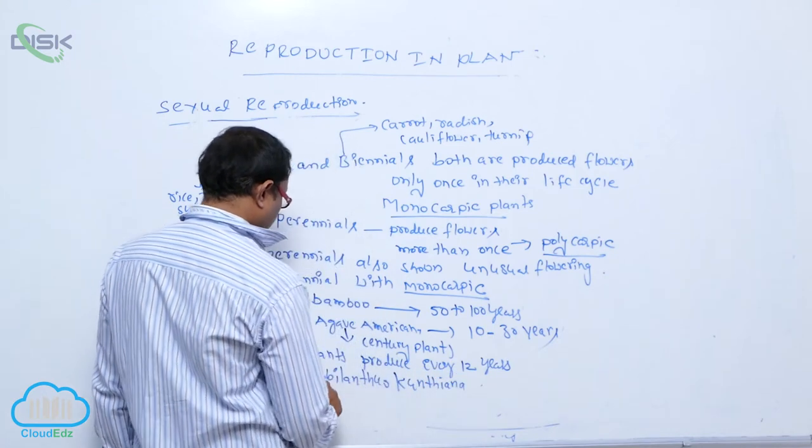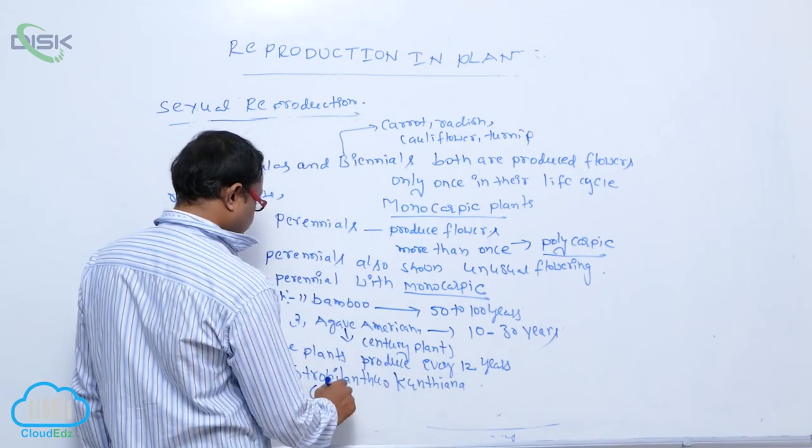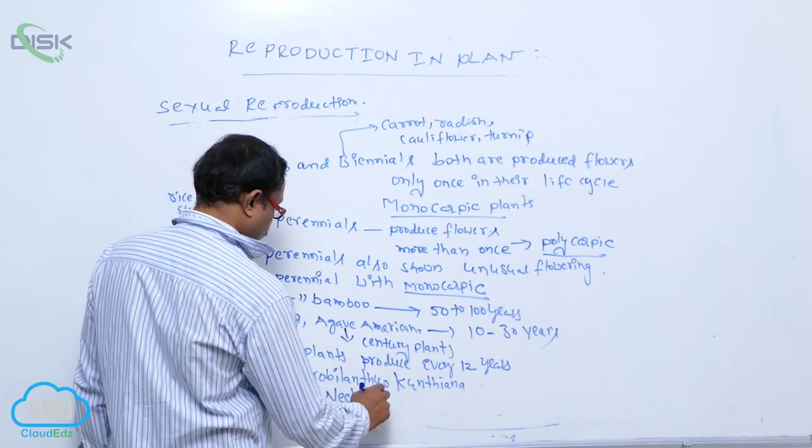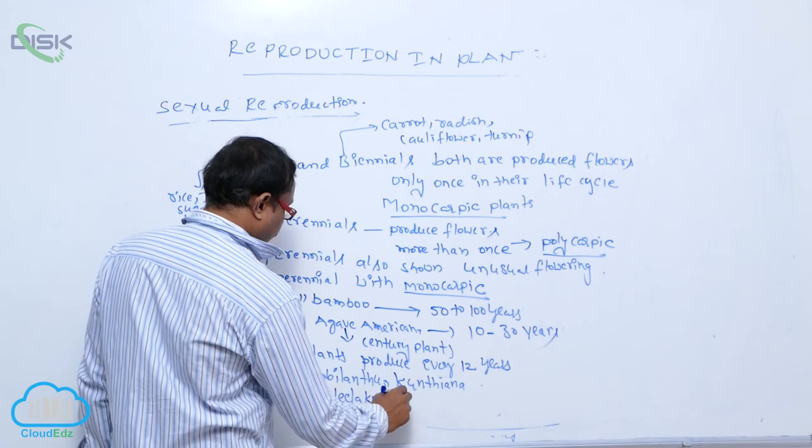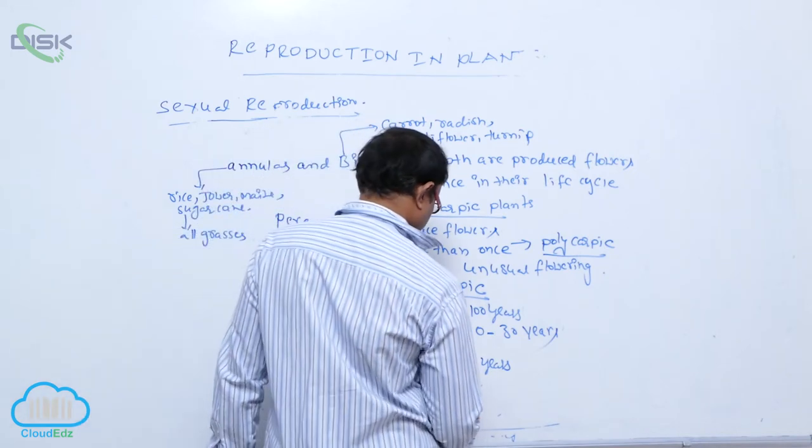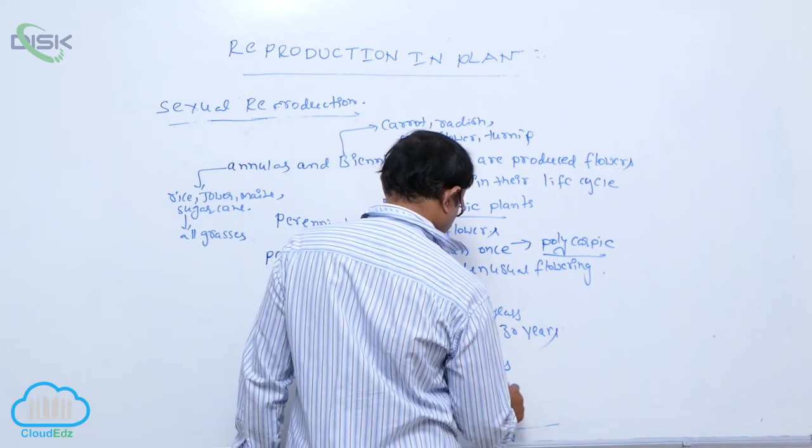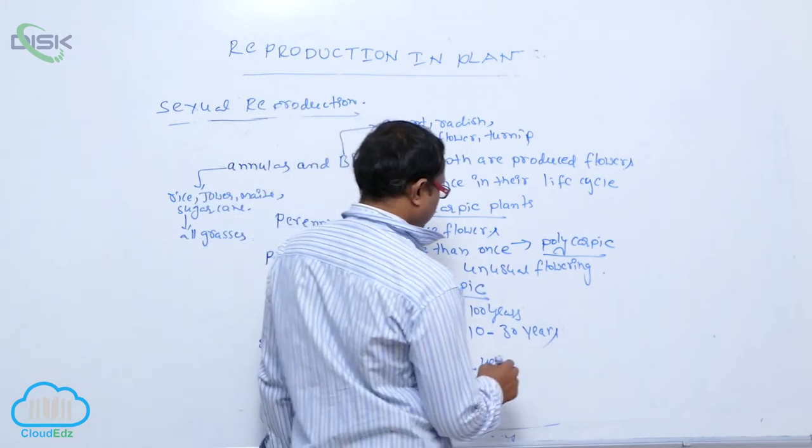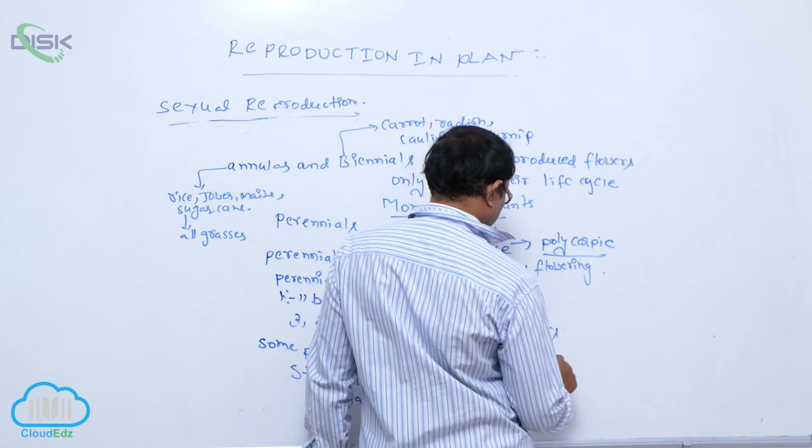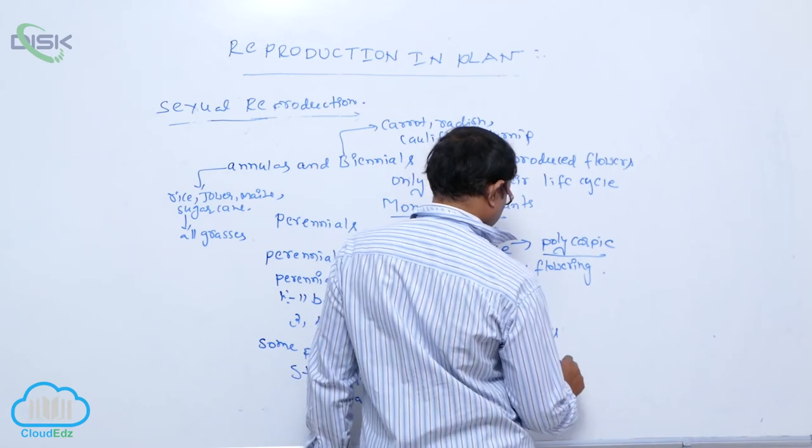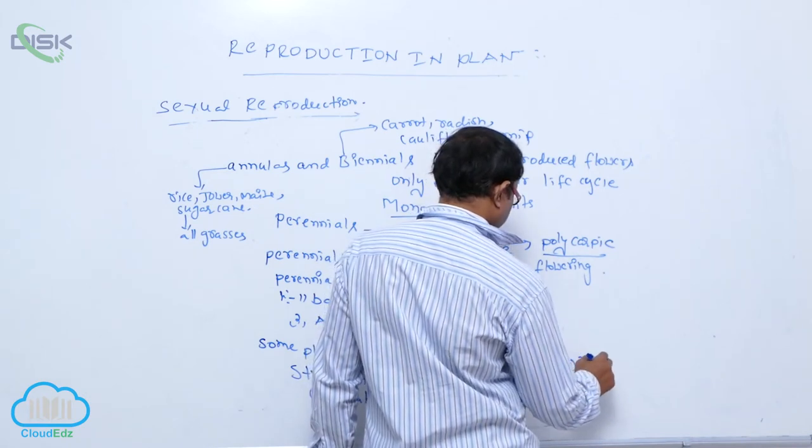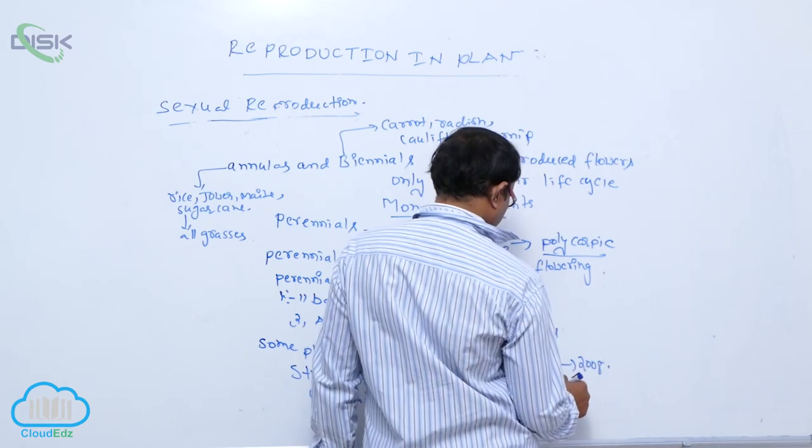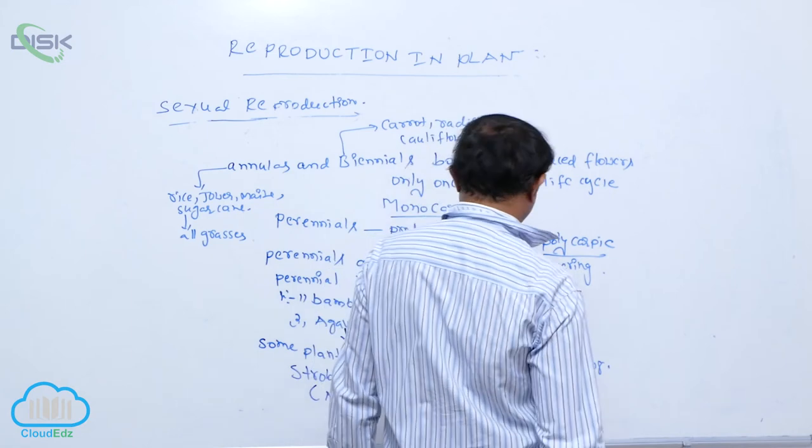Commonly it is known as Neelakurinji. This plant produces flowers every 12 years. It is also known as monocarpic. Generally it is September to October. For the first time in 2008. After 12 means? It produces the flowers.